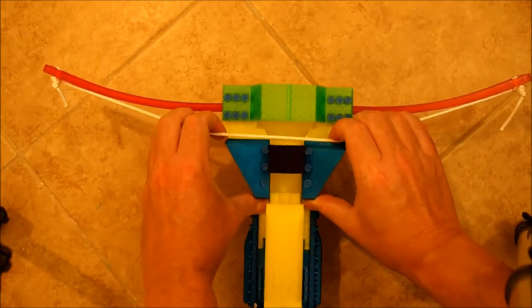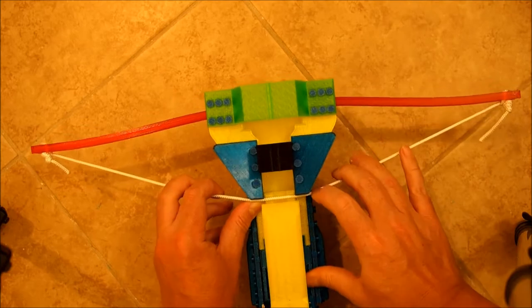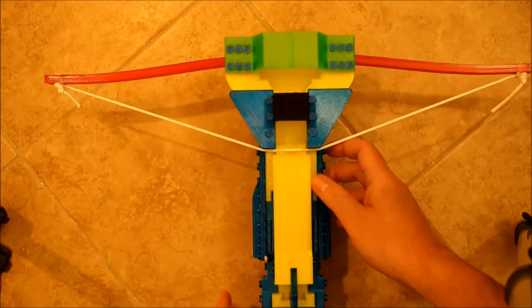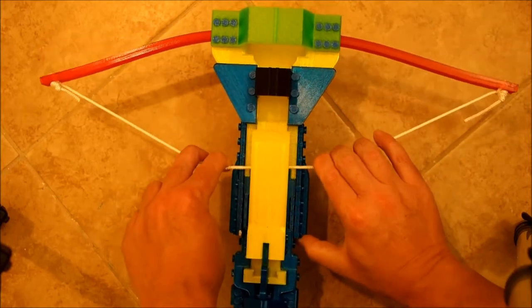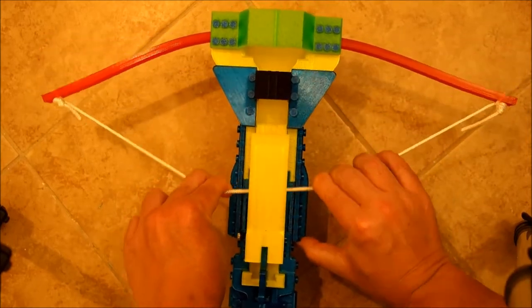And here you can see the slight recurve of the bow arms so that pressure is applied even at the starting position. And as we pull them back you can see the relative bending of the arms.